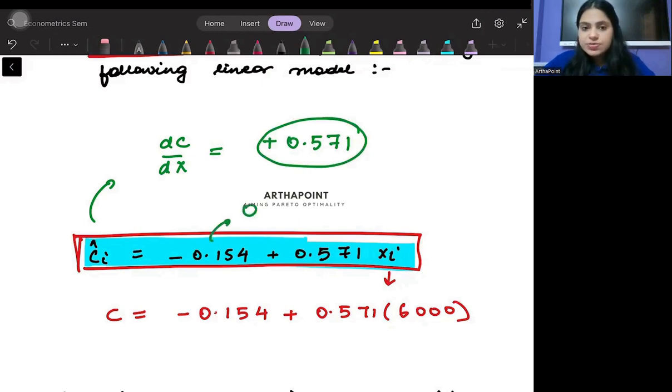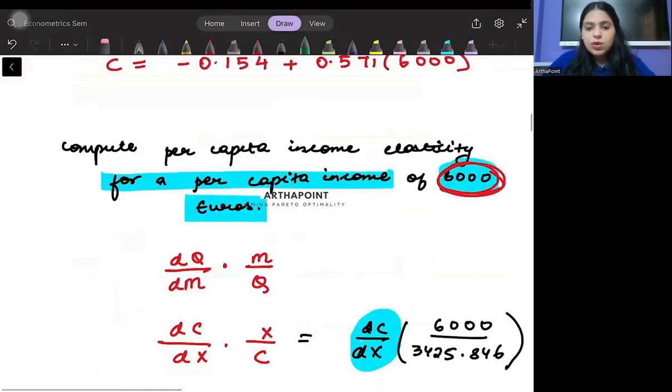Plus, differentiation of constant will be 0, differentiation of this will be 1 and this will be 0.571. So, answer will be plus 0.571.